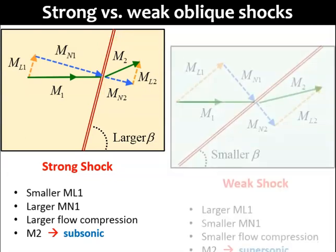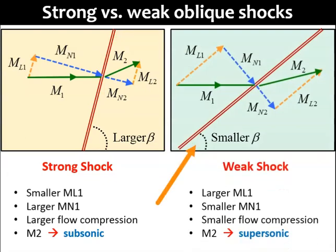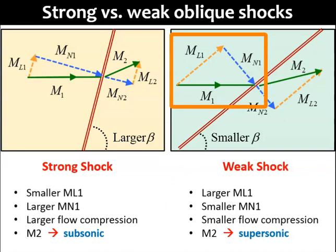On the other hand, a weak oblique shock has a smaller shock angle beta, which decomposes the incoming velocity into a smaller normal velocity Mn1, and a larger tangential velocity Ml1.